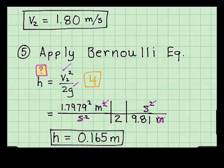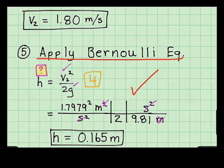To find the final problem goal, I apply the Bernoulli equation. The height of the fountain is 0.165 meters. That concludes this video. I hope you found it very useful. Thank you very much for listening.